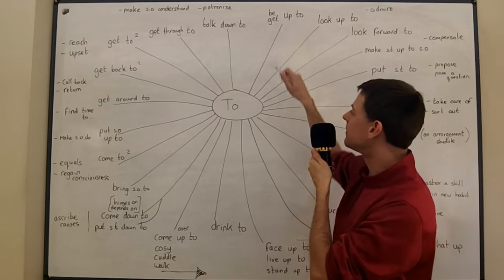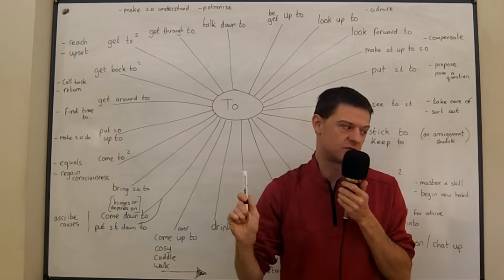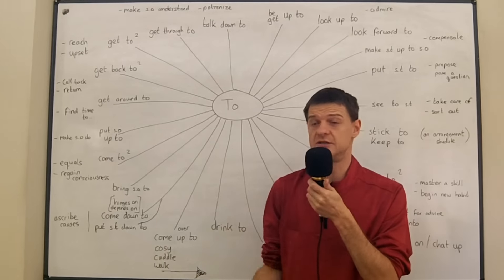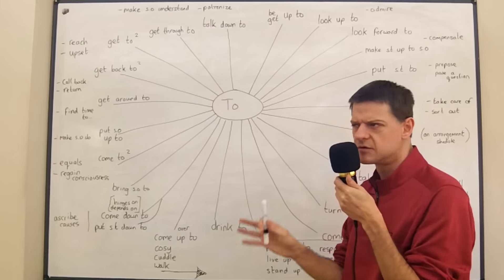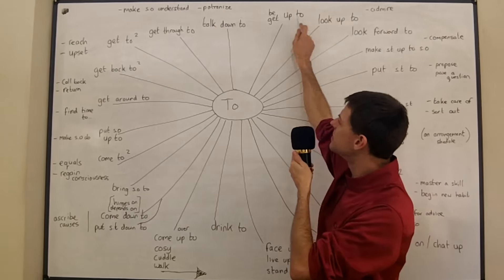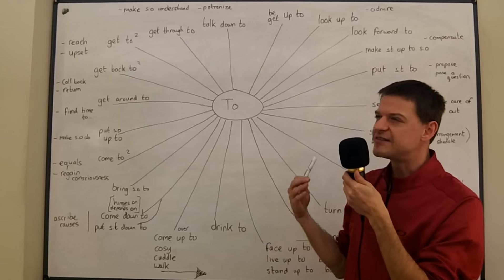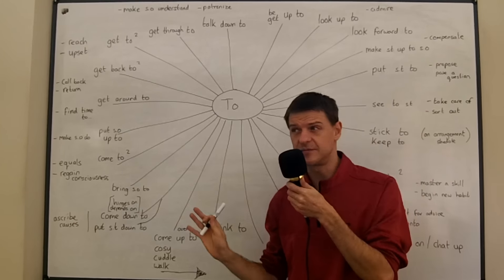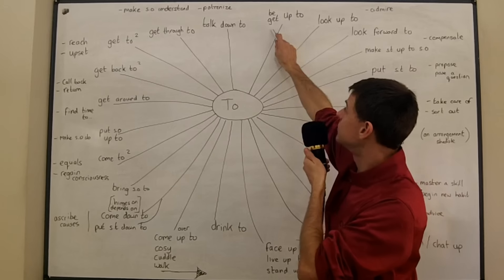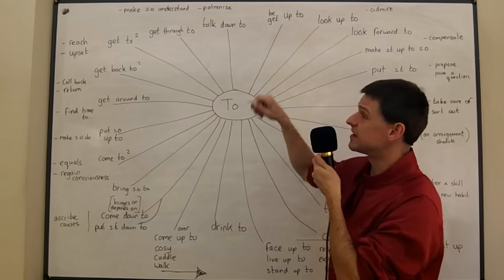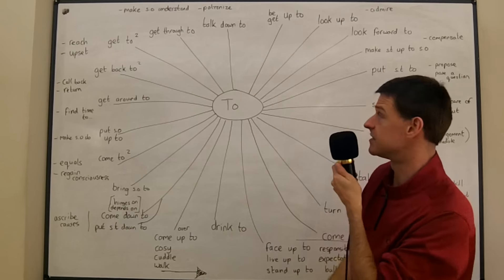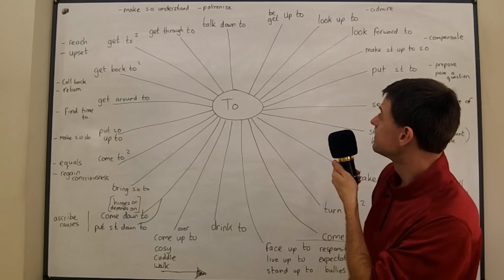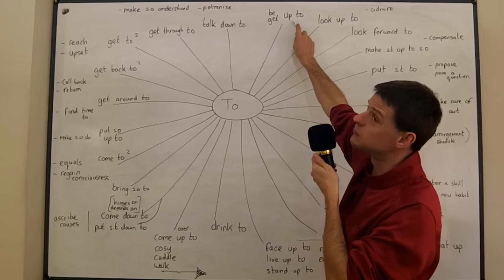So we'll start with be or get up to. We very often use this with kids when you ask them what they're doing and you say what are you up to? What have you been getting up to? We're talking about what have you been doing but it sounds like maybe they've been doing something a little bit naughty, a little bit suspicious. It could be used in that sense, doing something naughty. They were getting up to something, they were doing something naughty. Or just neutrally as do.